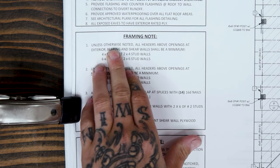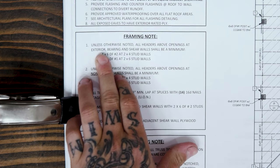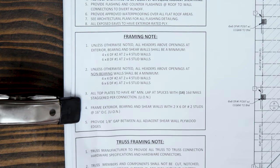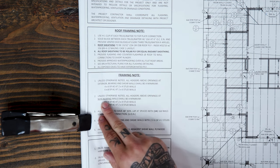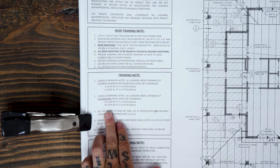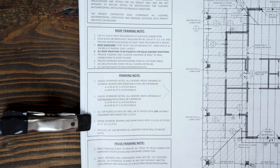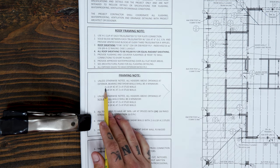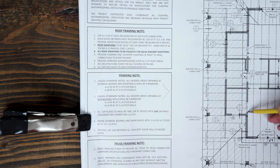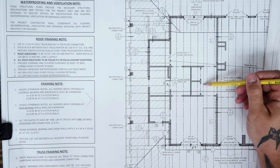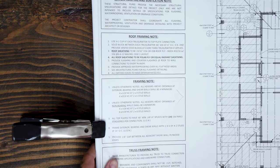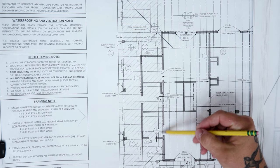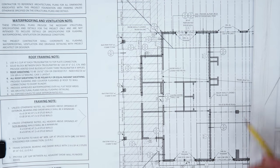Framing notes: unless otherwise noted, all headers above openings at exterior, bearing, and shear walls shall be a minimum of 4x6 for 2x4 walls and 6x8 for 2x6 walls. Number two, all headers above openings at non-bearing walls shall be a minimum of 4x4 at 2x4 walls and 6x6 at 2x6 walls. These two details are key — if an interior wall doesn't get a callout, you can reference this. Load bearing gets a 4x6; interior non-load bearing gets a 4x4.